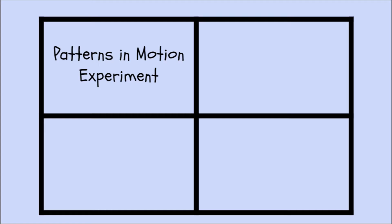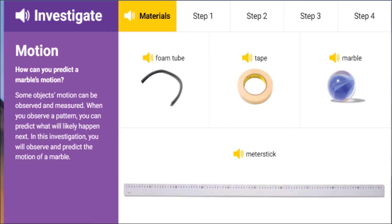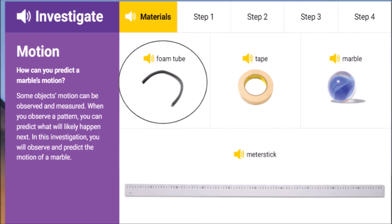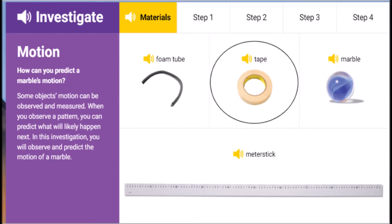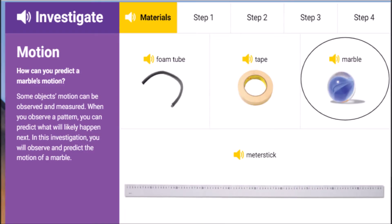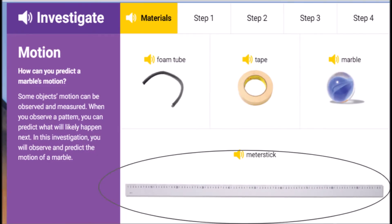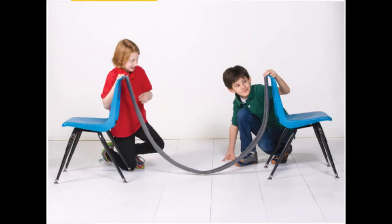In your science notebooks, title it Patterns in Motion Experiment. For this experiment, we're going to need a few materials: a foam tube, a roll of tape, a marble, and a meter stick. We'll also need two classroom chairs.